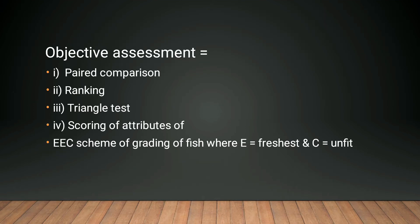Then there is the subjective method. In the objective method, we can do paired comparison — we are given two types of fish and we can compare them to detect whether both are useful or only one is useful for us. Then there is the ranking method, where we give a rank to the given specimen. It can be scored on a scale of 0 to 10, categorized according to our objective assessment.